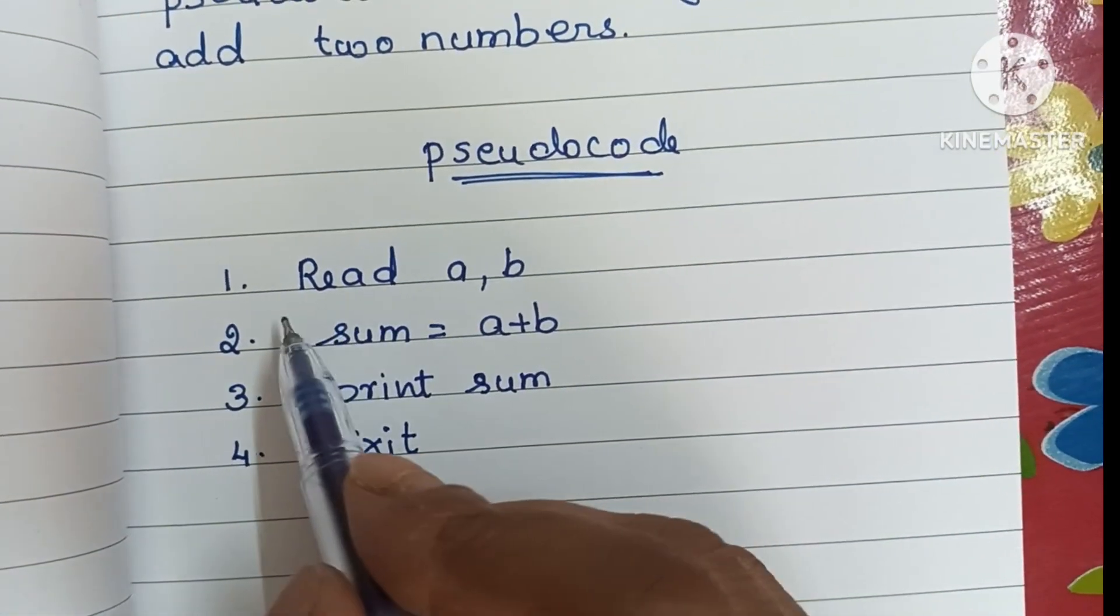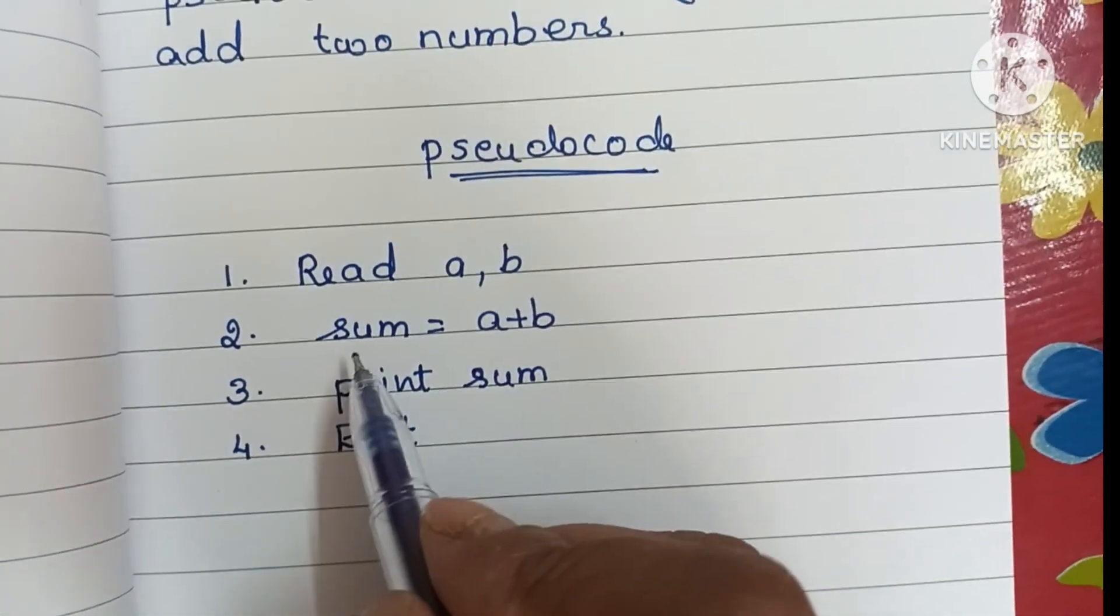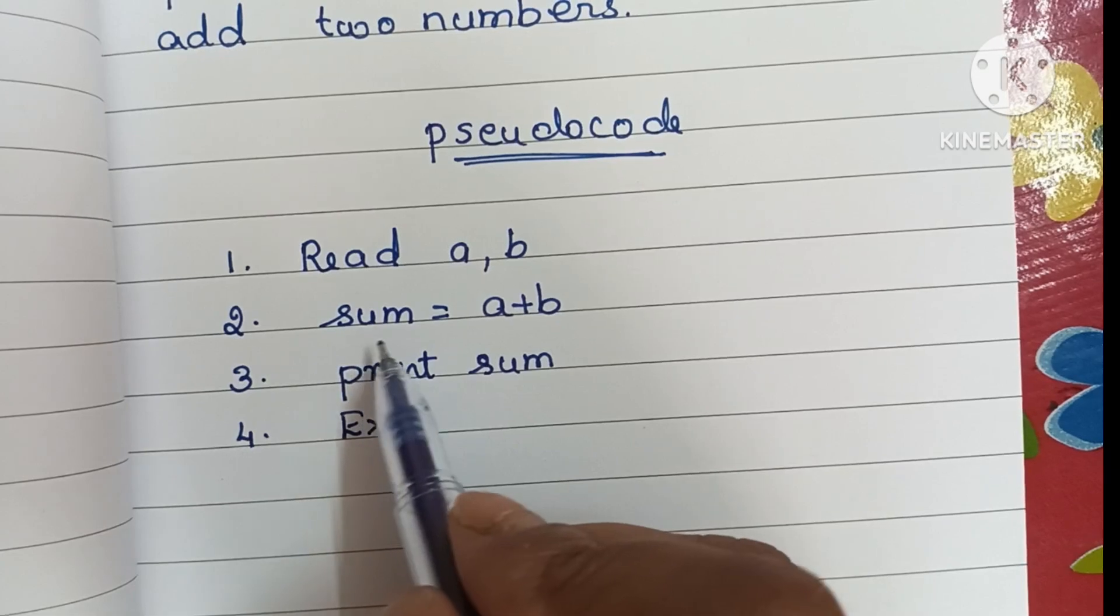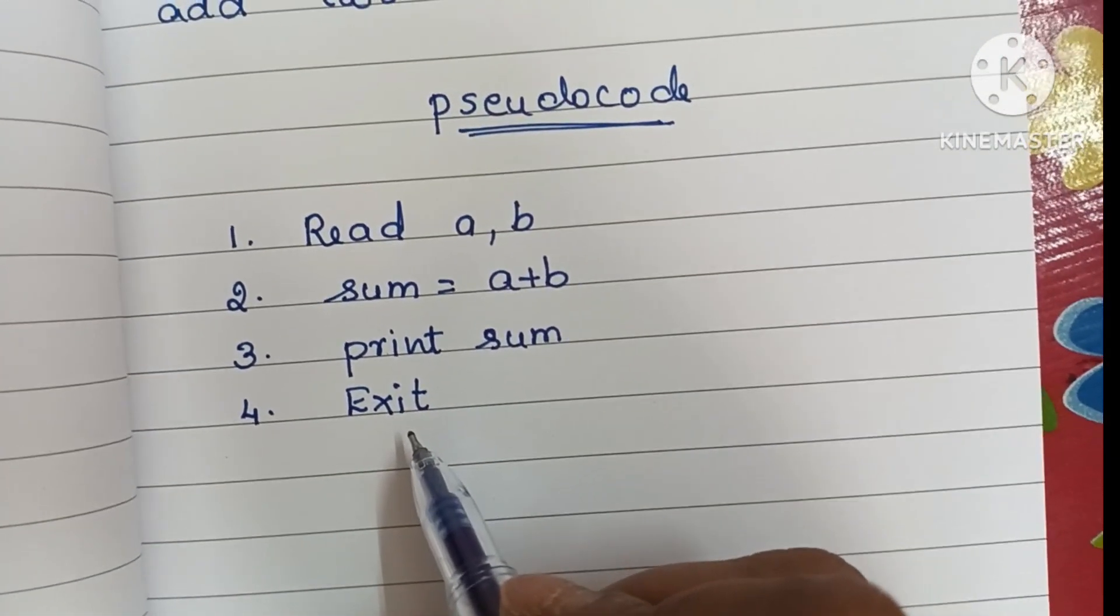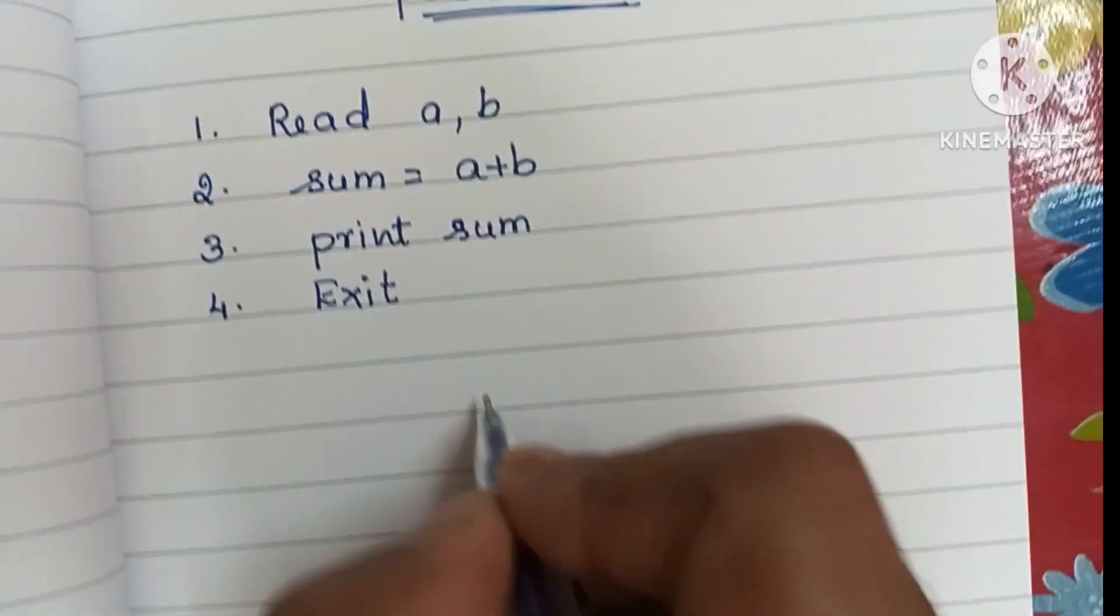So the pseudocode is: read a and b, next we have to add two numbers, that is sum equals a plus b, next we have to print sum, fourth one is exit. Next, algorithm.